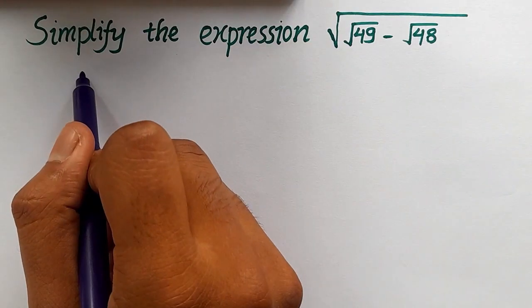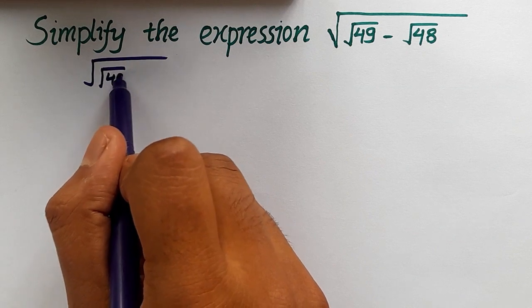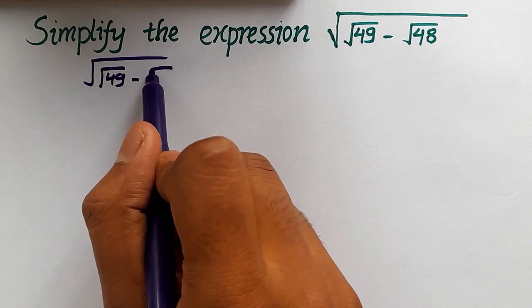Let's work on the given expression: the square root of (√49 - √48).